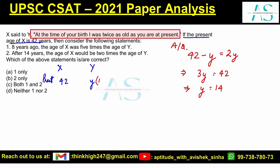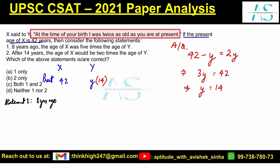Let's move forward and look at Statement 1. Eight years ago: X's age = 42 − 8 = 34, and Y's age = 14 − 8 = 6. The statement says the age of X was 5 times the age of Y, so 5 × 6 = 30. But X's age was 34, not 30. So this statement is absolutely wrong — Statement 1 does not follow.